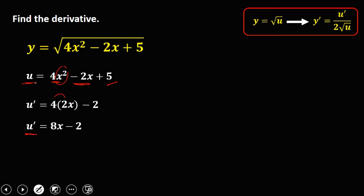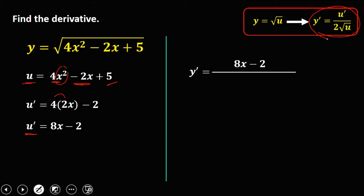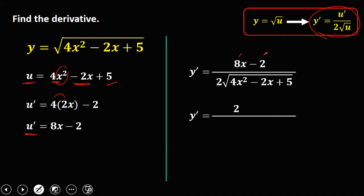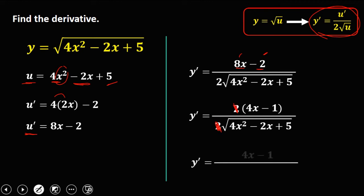Then substitute these values to the formula. So y prime is equal to u prime, that's 8x minus 2, over 2 times the square root of u, or square root of 4x squared minus 2x plus 5. Since we can factor out 2 from the numerator: 8x divided by 2 is 4x, and negative 2 divided by 2 is negative 1, over 2 times the square root of 4x squared minus 2x plus 5. Cancel out the 2, so y prime is equal to 4x minus 1 over the square root of 4x squared minus 2x plus 5. So this is now the derivative.